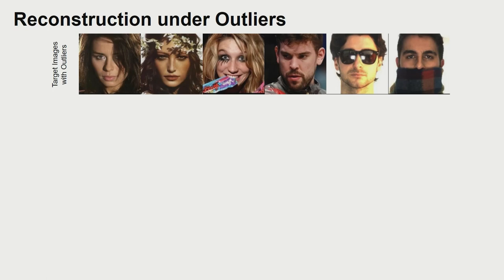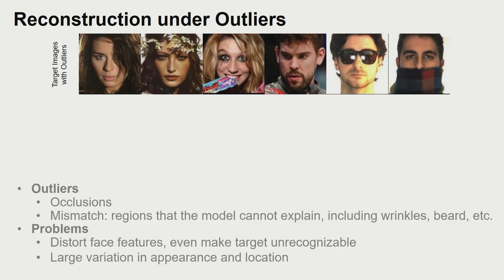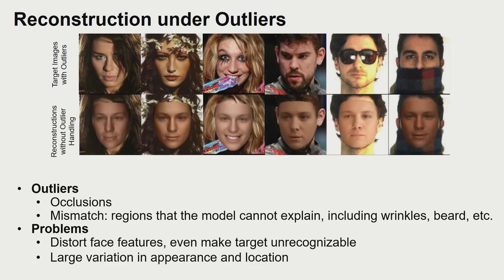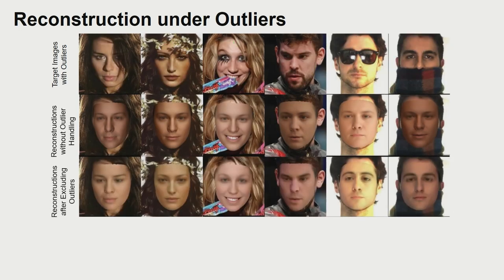One challenge for model-based face autoencoders is face outliers. The outliers are a combination of occlusions and mismatches, which are facial parts that cannot be explained well by the face model. Fitting the outliers often distorts the prediction, so we propose to only fit the inliers to improve the reconstruction.